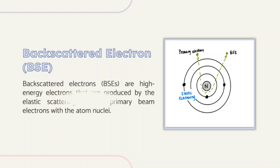Backscattered electrons, BSEs, are high-energy electrons that are produced by the elastic scattering of the primary beam electrons with the atom nuclei. The yield of BSEs — that is, the ratio of the number of emitted BSEs to the amount of primary beam electrons — depends on the atomic number. The higher the atomic number, or the heavier the element, the brighter the contrast.